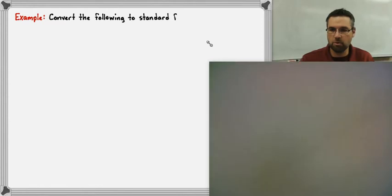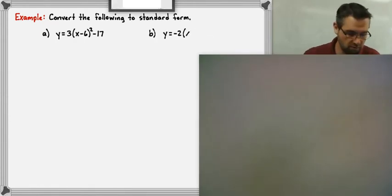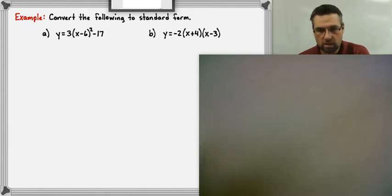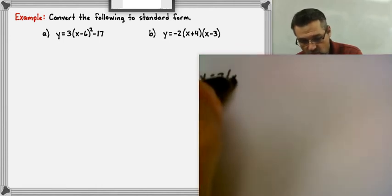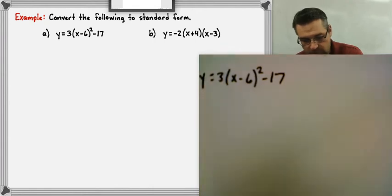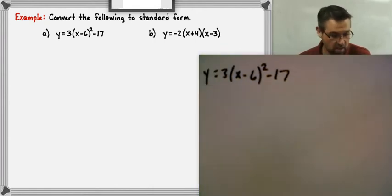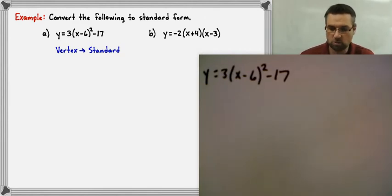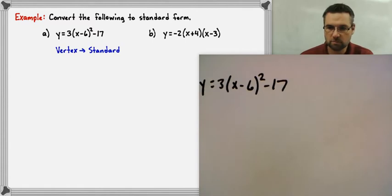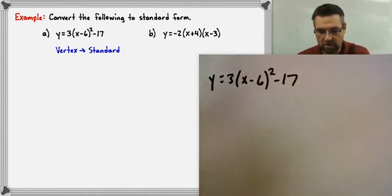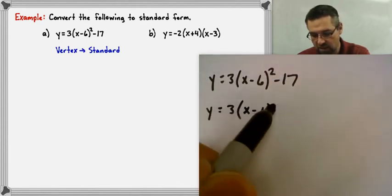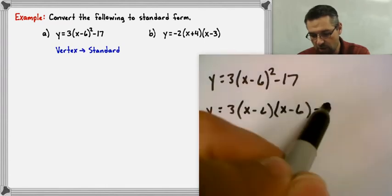Let's take a look at an example of converting. In the first case, we are given y equals 3 times (x minus 6) squared minus 17. This is vertex form and we are trying to convert it to standard form. Remember, standard form is y equals ax squared plus bx plus c, so we need to get rid of the parentheses. The first thing we have to do is expand — (x minus 6) squared is (x minus 6) times (x minus 6). We'll rewrite that as x times (x minus 6) plus negative 6 times (x minus 6).